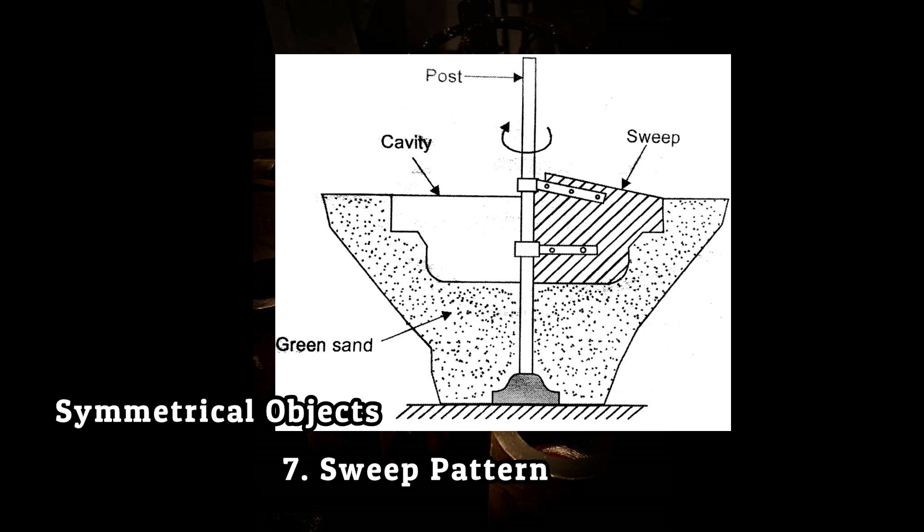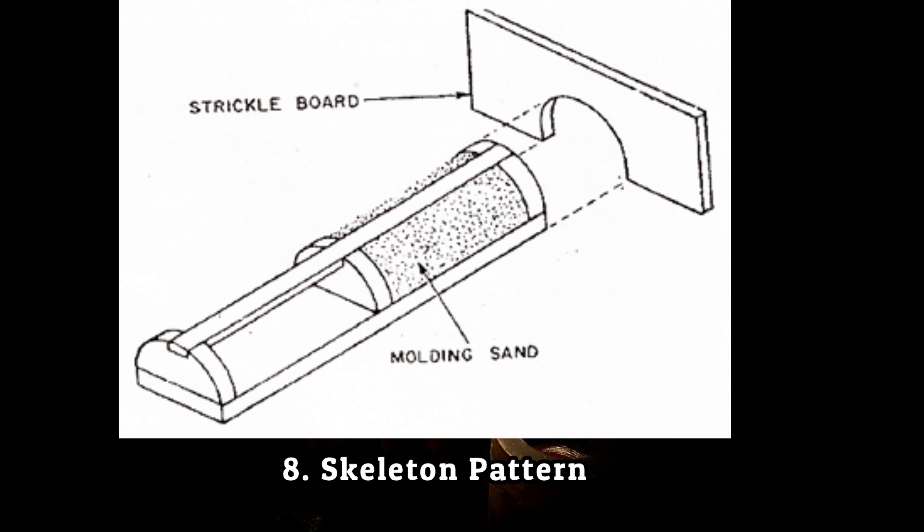Eighth is skeleton pattern. These patterns are used for large simple castings. In these patterns, a skeleton-like structure is made by using simple pattern sections. This will save both time and material.